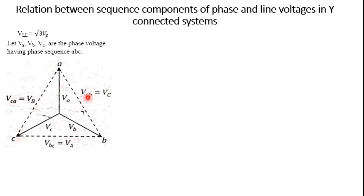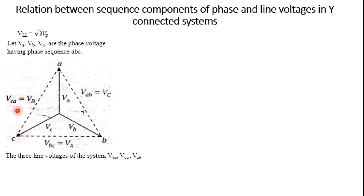Between A and B, the label is opposite to the vertex C. Between VBC it is opposite to vertex A, and similarly for CA it is B. So the three line voltages of the system are VAB, VBC, and VCA, and each is labeled by the opposite vertex.